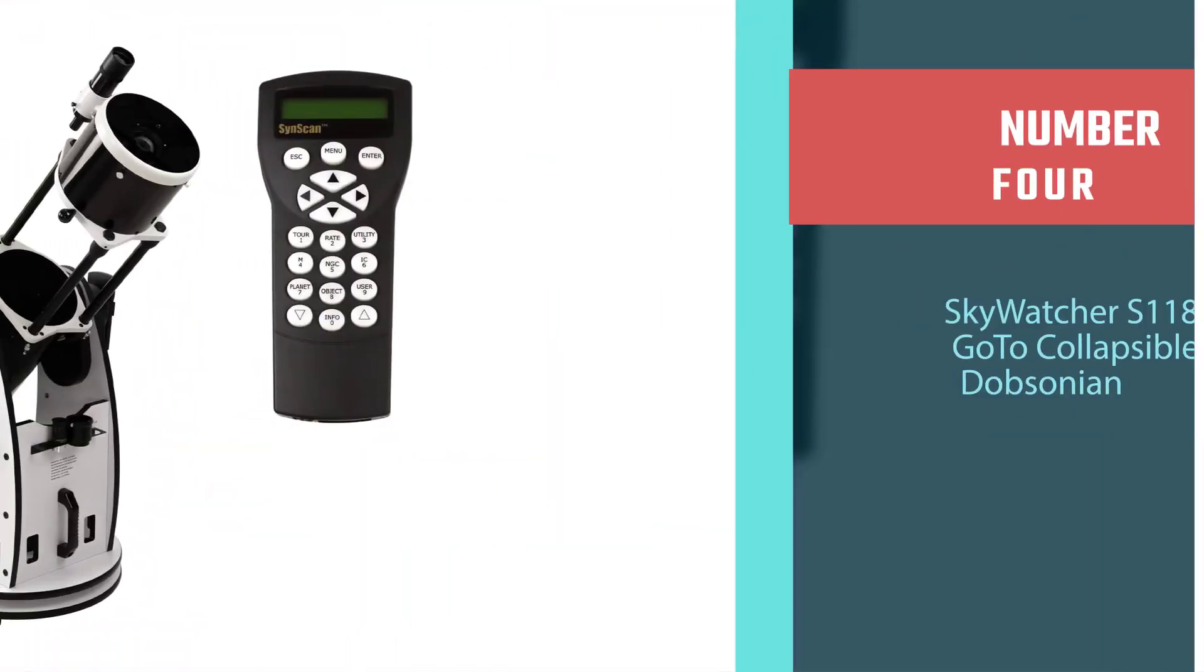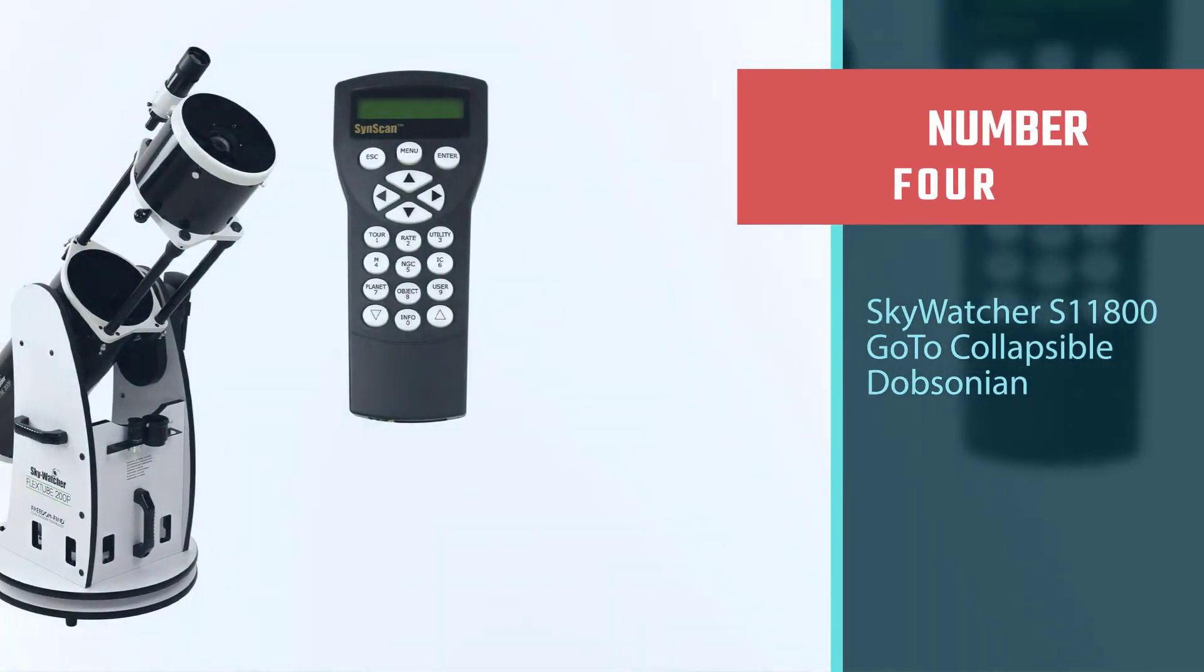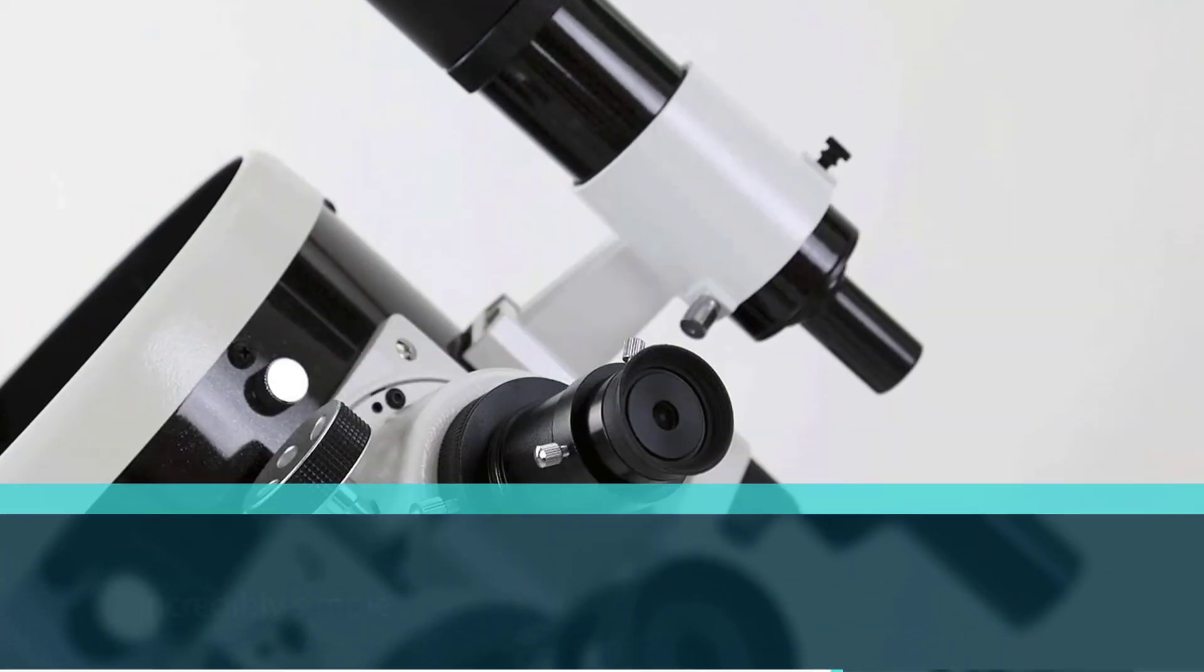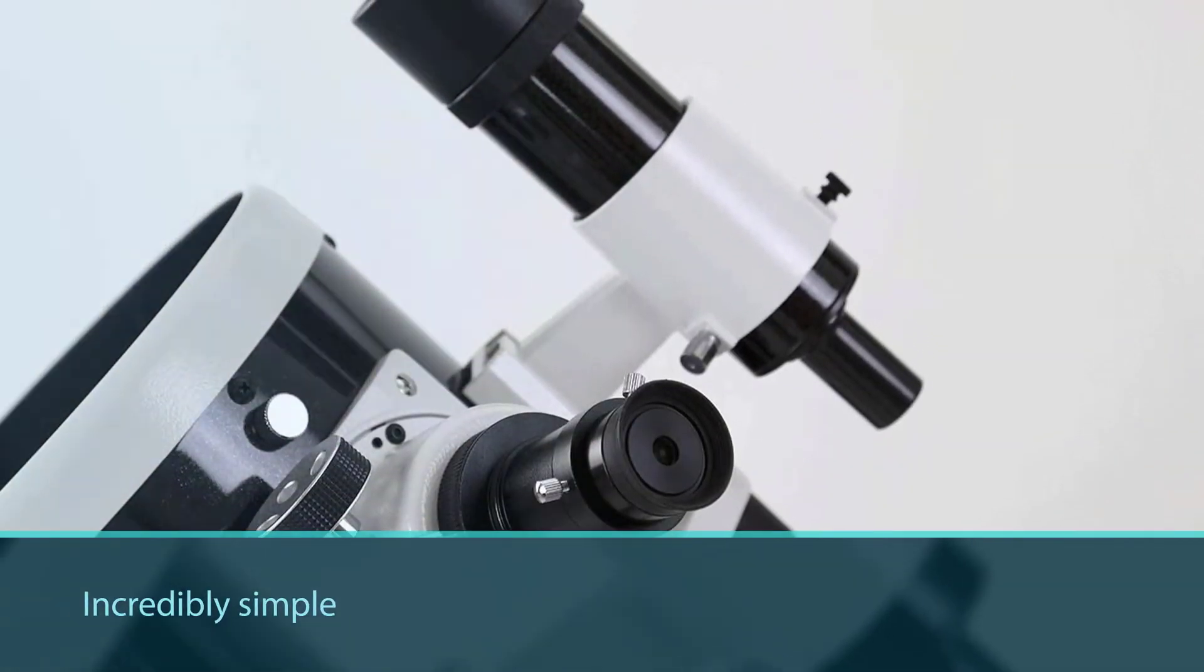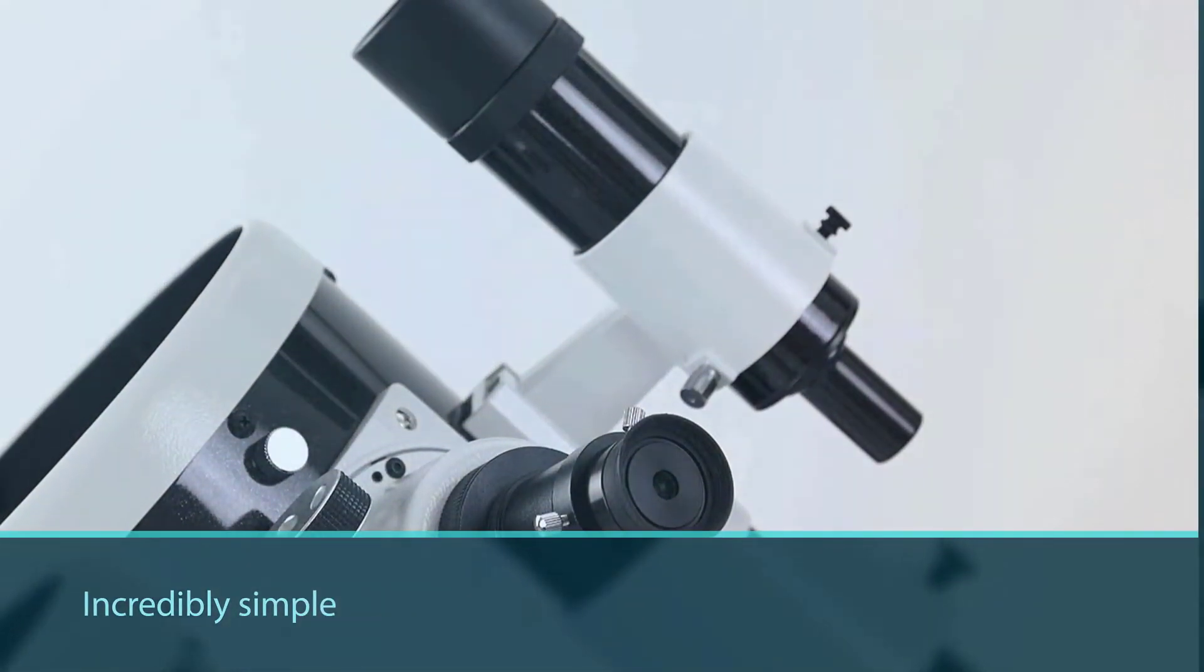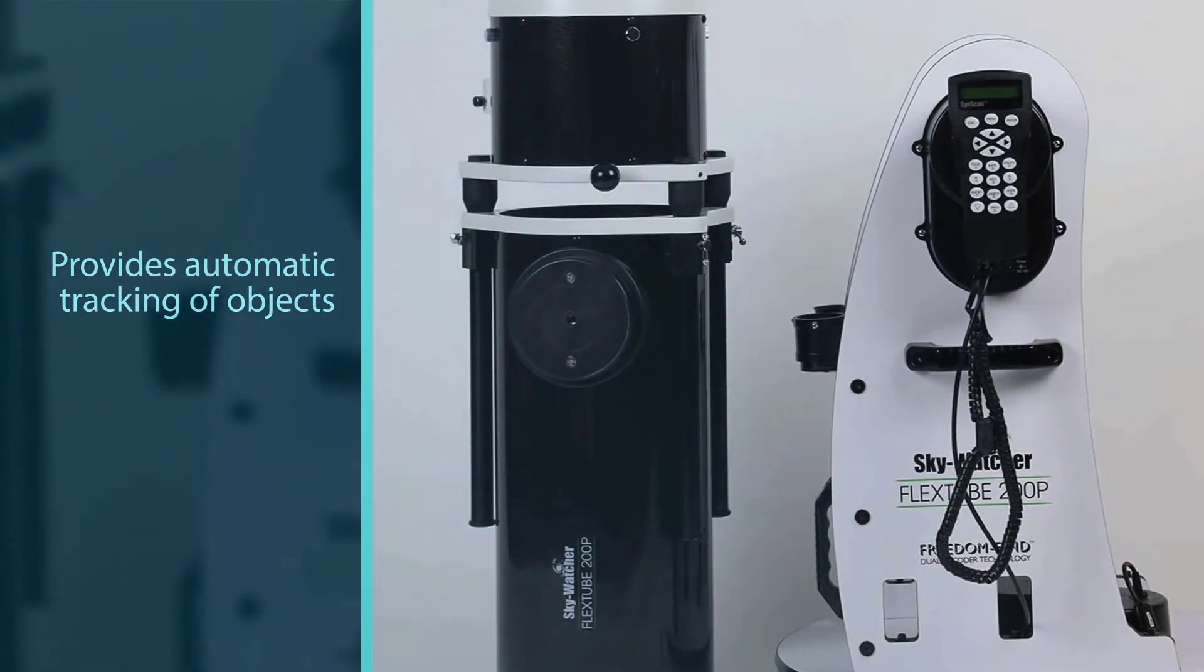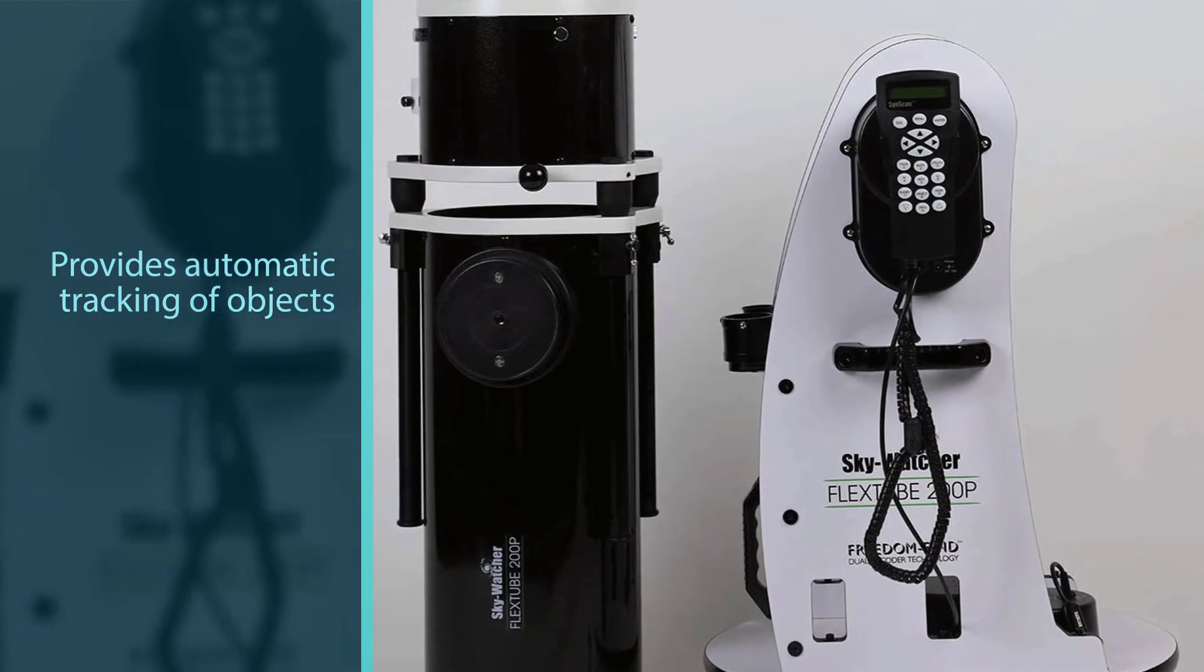Number four: Sky-Watcher S11800 GoTo collapsible Dobsonian. It's incredibly simple to align the telescope. It provides automatic tracking of objects at high magnifications and allows quick transition from automatic to manual adjusting.